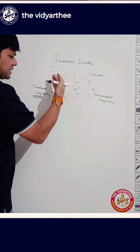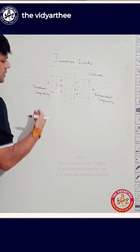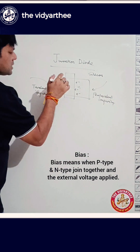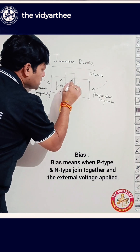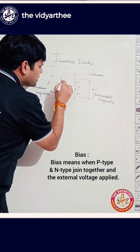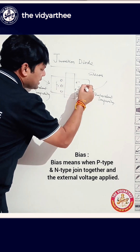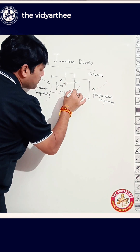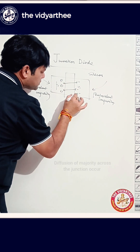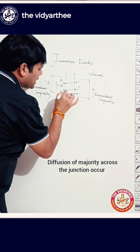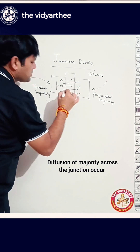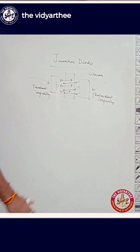They will try to — when it is not forward biased, so they will start moving towards where they are minority. Here they are majority, so electrons will try to move in the opposite direction. And similarly, holes also will start moving in the opposite direction; they will move towards the N-type.